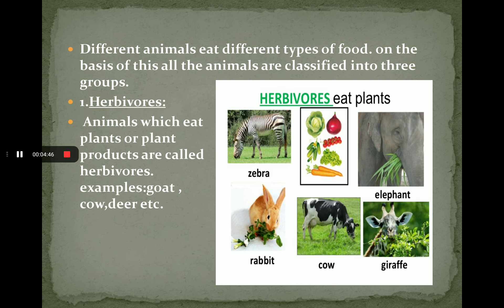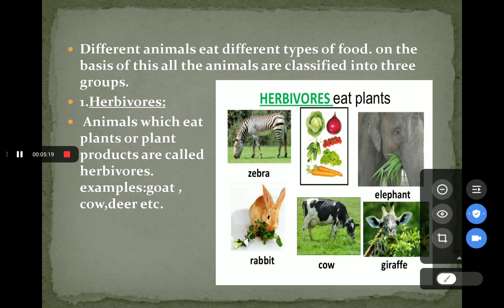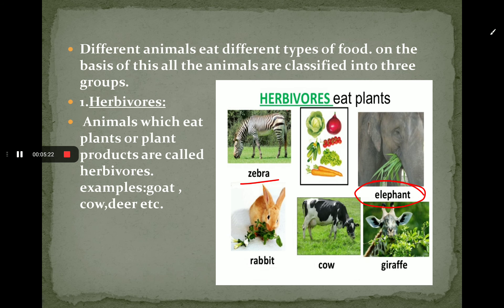As we know, different animals eat different kinds of food. So, on the basis of their food habits, all animals are classified into three categories: first is herbivores, second is carnivores and third is omnivores. In the first category, herbivores, the animals which eat plants or plant products are called herbivores. For example, as you can see in the image: zebra, elephant, rabbit, cow, giraffe. You can also give some more examples of herbivores.